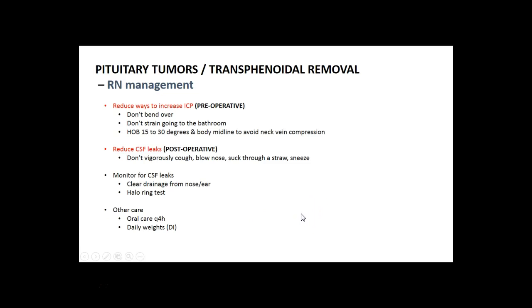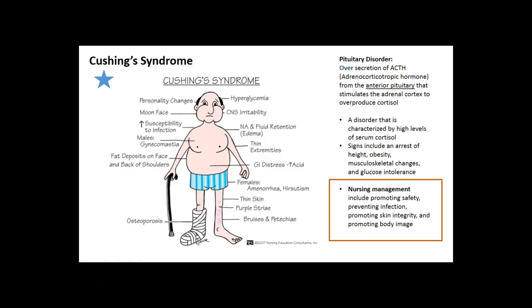One condition that can result from a pituitary disorder is Cushing's — you'll also see this as a problem of the adrenal glands. If the problem is from the pituitary, it's an over-secretion of ACTH, the adrenocorticotropic hormone, coming from the anterior pituitary. This basically causes overproduction that stimulates the adrenal cortex to produce cortisol. Cortisol is a steroid, so think of the issues patients have with long-term steroid use — this puts them at increased risk of infection.